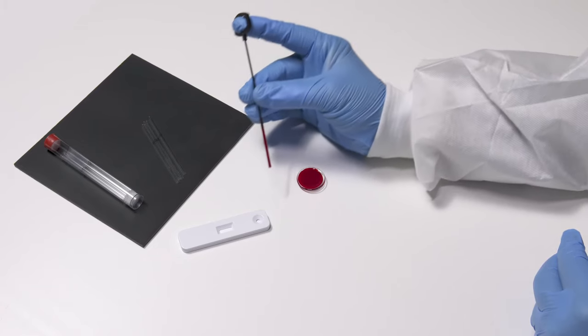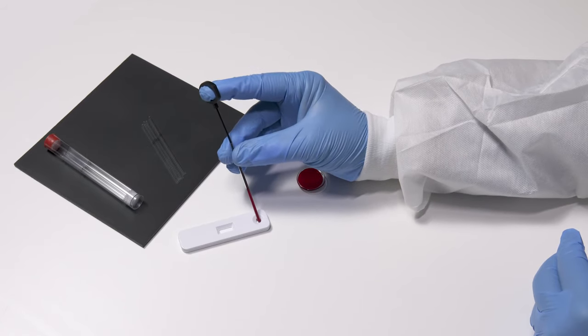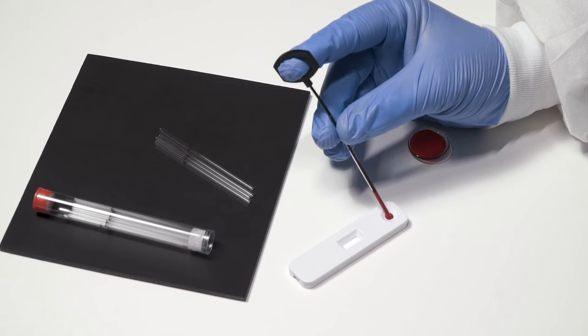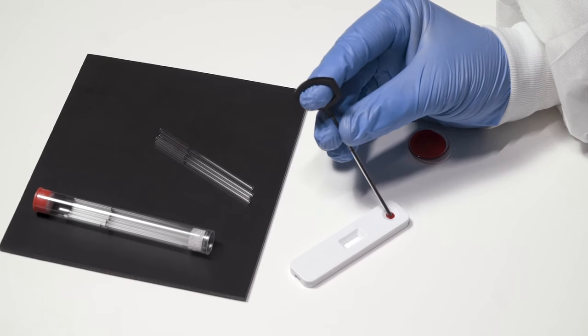To dispense, simply hold the tube over the desired sample target area and apply slow, even pressure until the desired amount is dispensed.